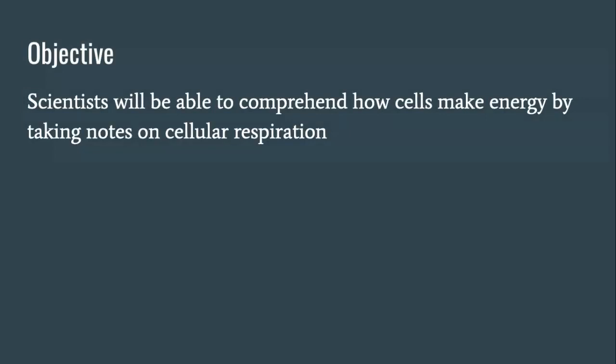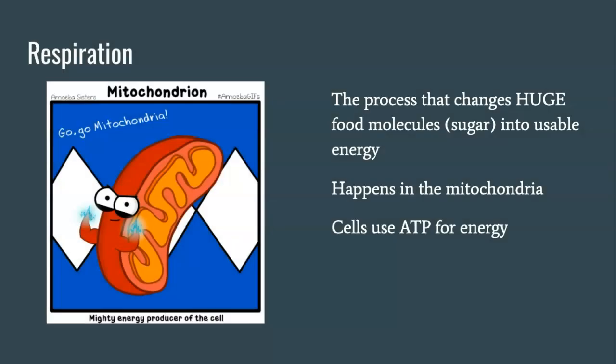So in this video, scientists will be able to comprehend how cells make energy by taking notes on cellular respiration. To begin, what is respiration? Well, respiration is a process that changes huge food molecules, namely sugar, into usable energy. Again, cells can't use molecules for energy. They have to convert it. And this process happens in the mitochondria. Cells can't use food directly. They have to convert the energy in food into ATP, and that is the job of the mitochondria.